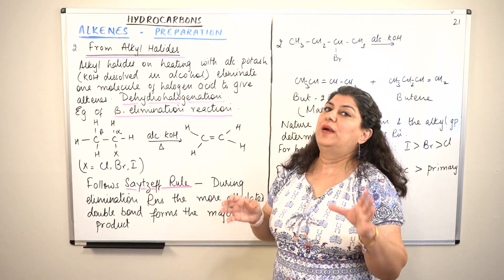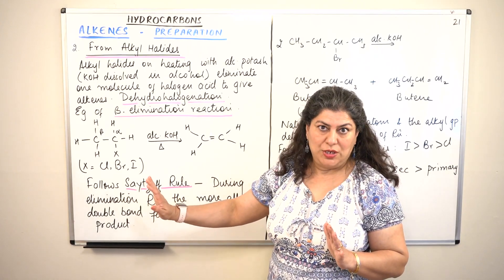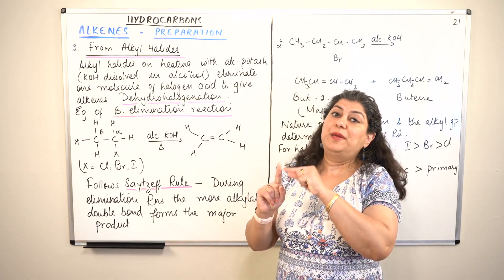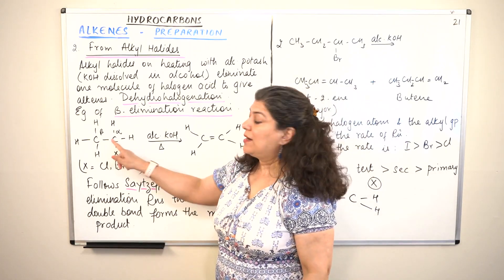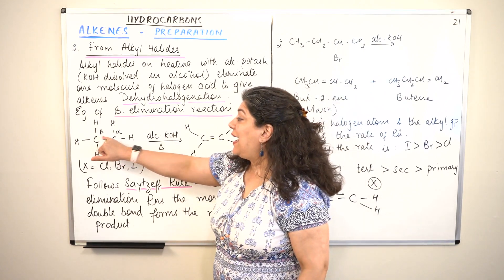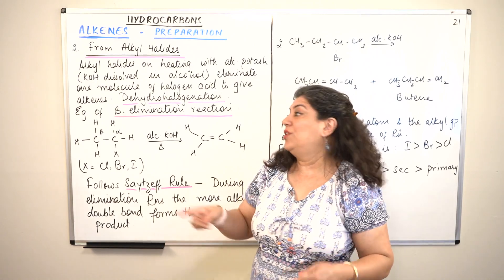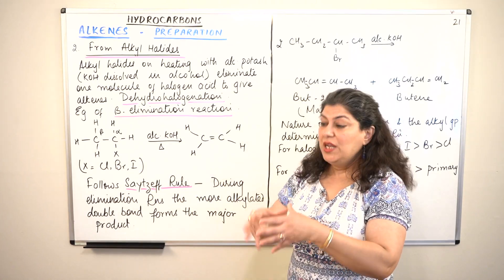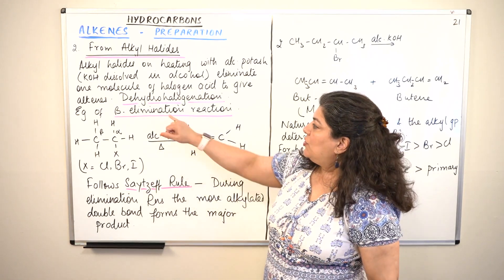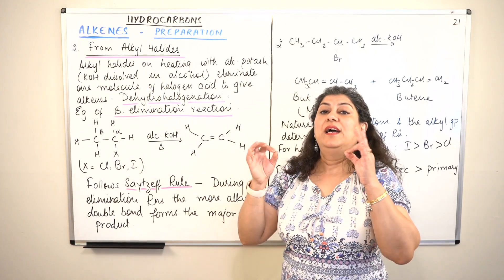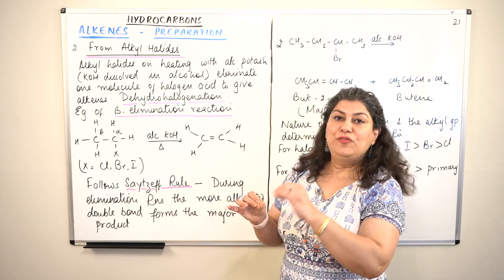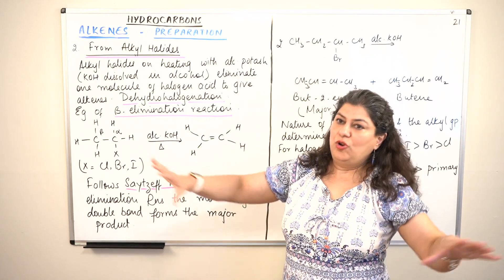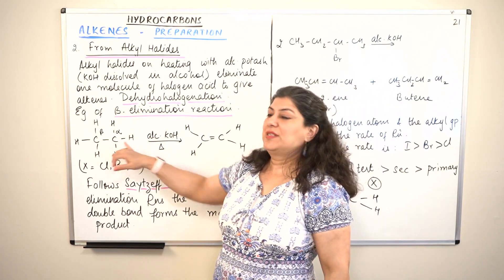To get an alkene from an alkyl halide, the halogen from the alpha carbon must be lost. But the hydrogen that is also lost must come from the beta carbon — the carbon next to the alpha carbon. Only then will the two neighboring carbons each have a single electron to share, forming a pi bond, a double bond. This reaction takes place in the presence of alcoholic potassium hydroxide with heating.